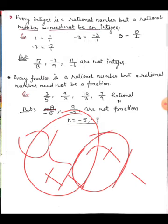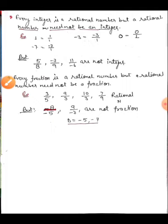But numbers like five upon eight, minus seven upon nine, or eleven upon minus six are not integers — they are rational numbers in fraction form. Every integer can be written as a rational number, but not every rational number is an integer. Similarly, a fraction can be a rational number, but a rational number with a negative denominator may need special attention.